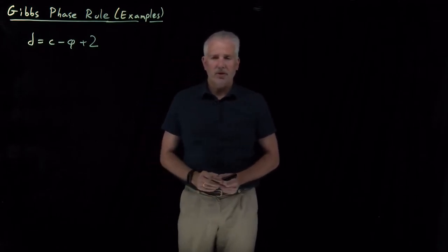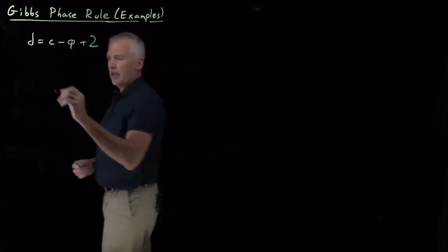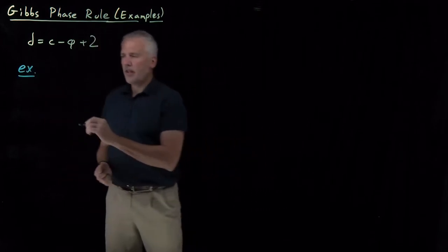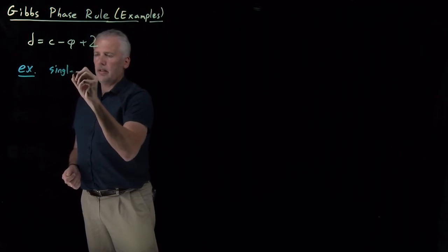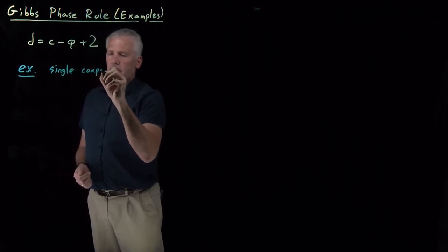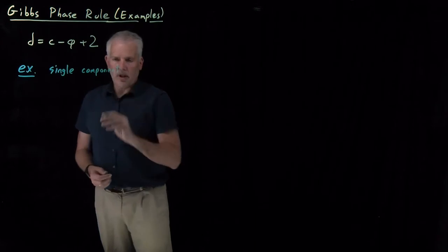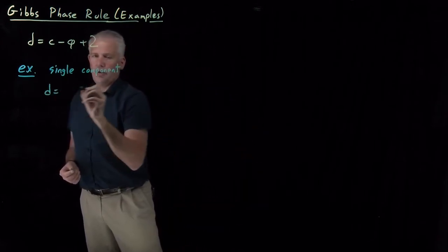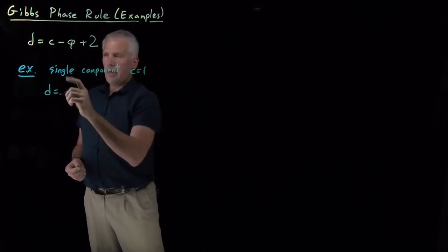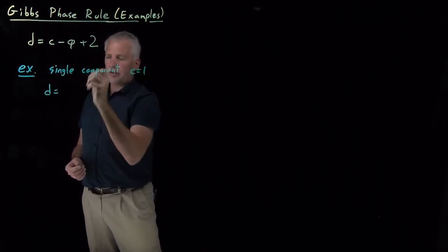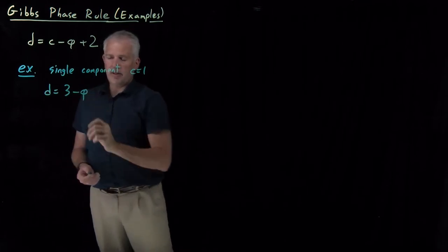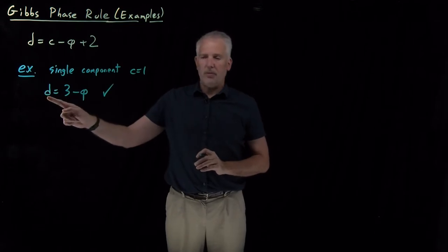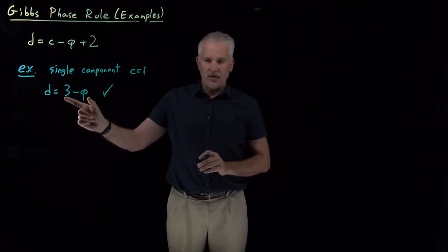Let's work a few examples and make sure that makes sense. We can first do a couple of examples where we already know the answer. For a single-component system, c equals one. Plugging that in: one plus two equals three minus phi, which is the same result we've gotten previously for the number of degrees of freedom in a single-component system.